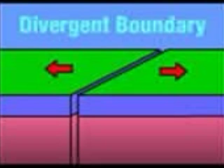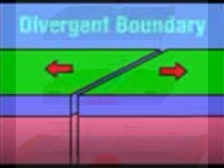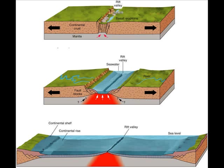There are two types of divergent boundaries: continental and oceanic. In the divergent continental boundary, a rift valley forms. Because of magma coming out, the continental crust cracks. As the crust pulls apart, large parts of rock sink and make a rift valley. As it spreads farther, it makes a narrow sea or lake, and eventually forms an ocean.